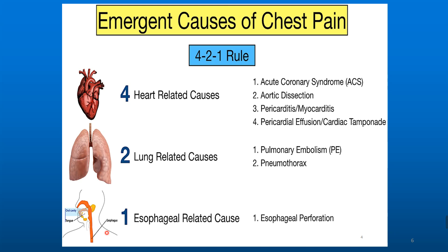Whenever a patient comes with chest pain, we must rule out emergent causes: four cardiac — acute coronary syndrome, aortic dissection, pericarditis or myocarditis, and pericardial effusion or cardiac tamponade; two pulmonary — pulmonary embolism and pneumothorax; and one esophageal — esophageal perforation.